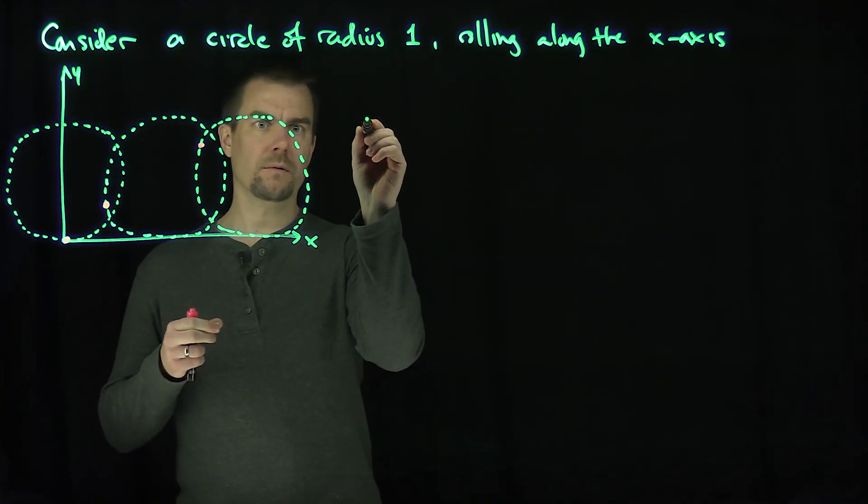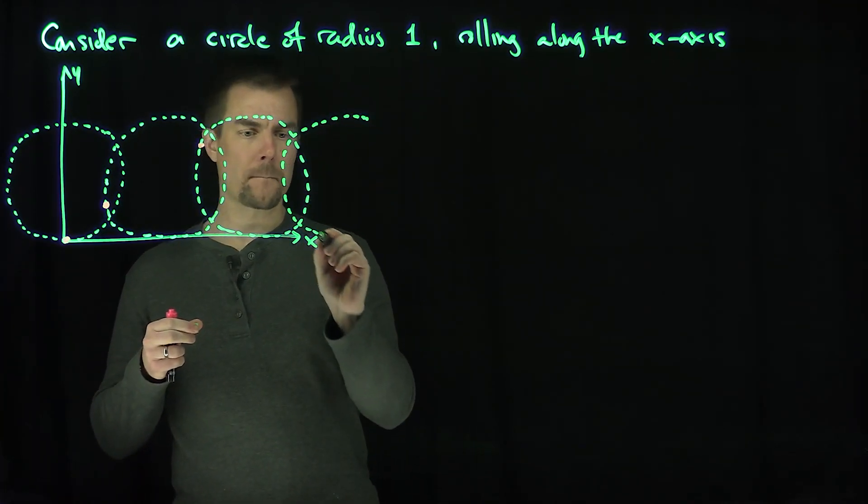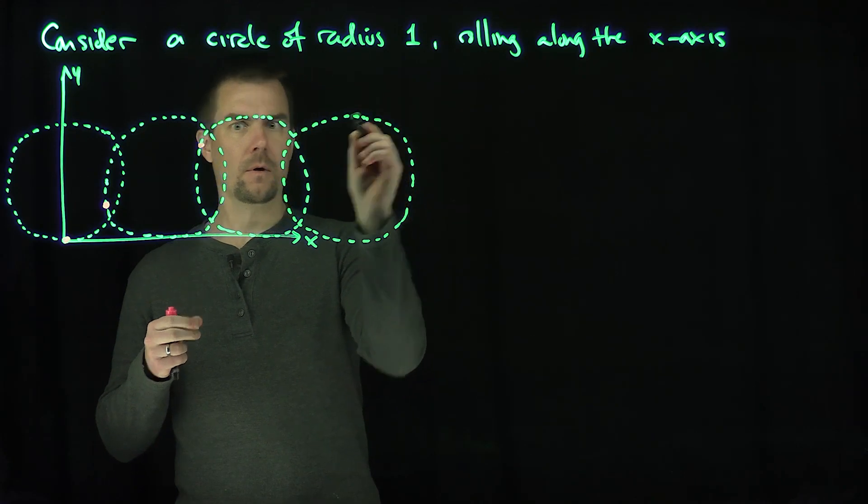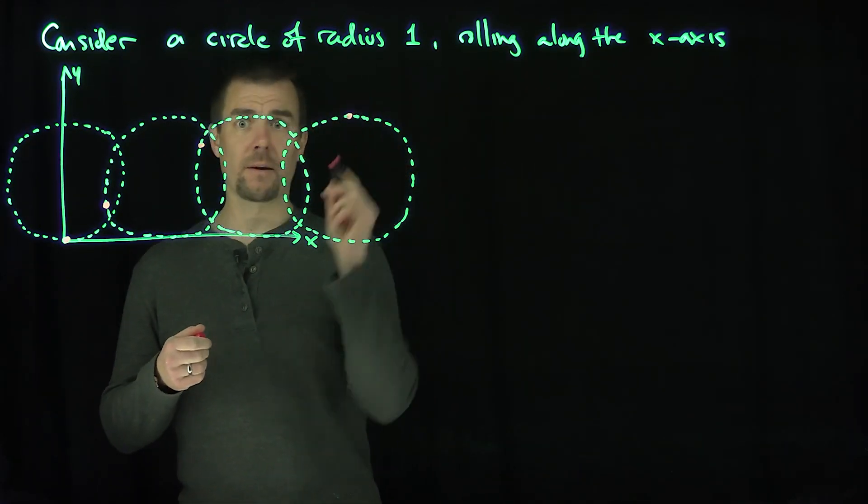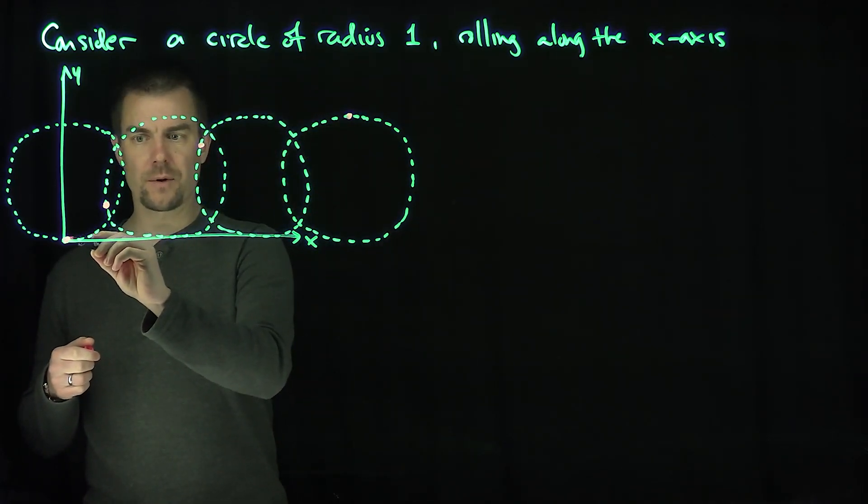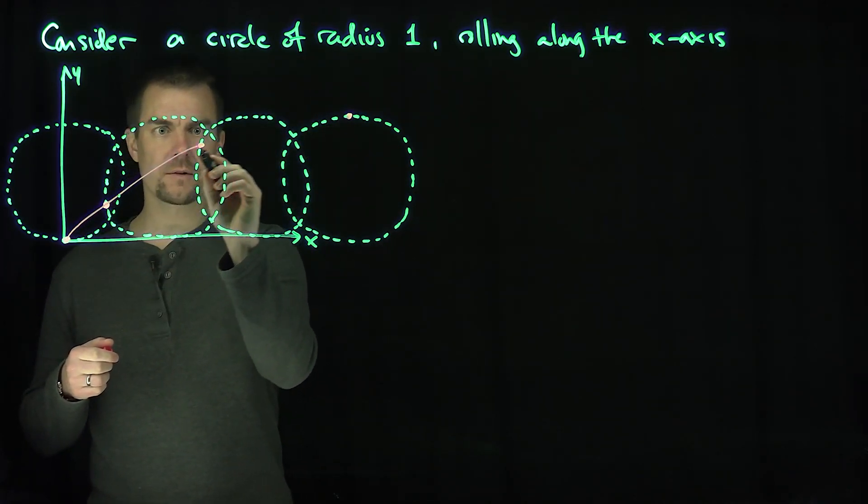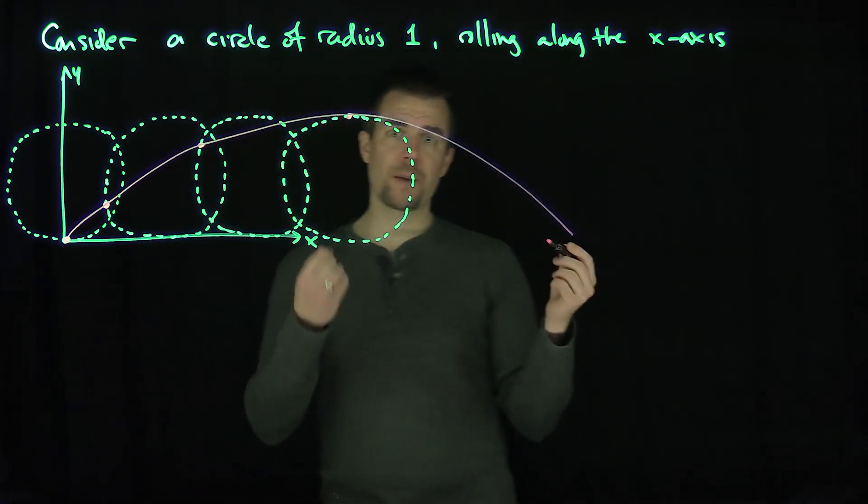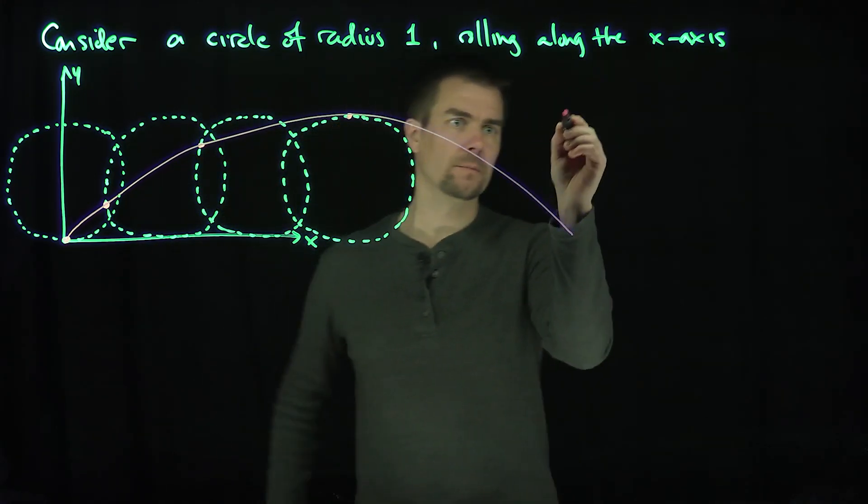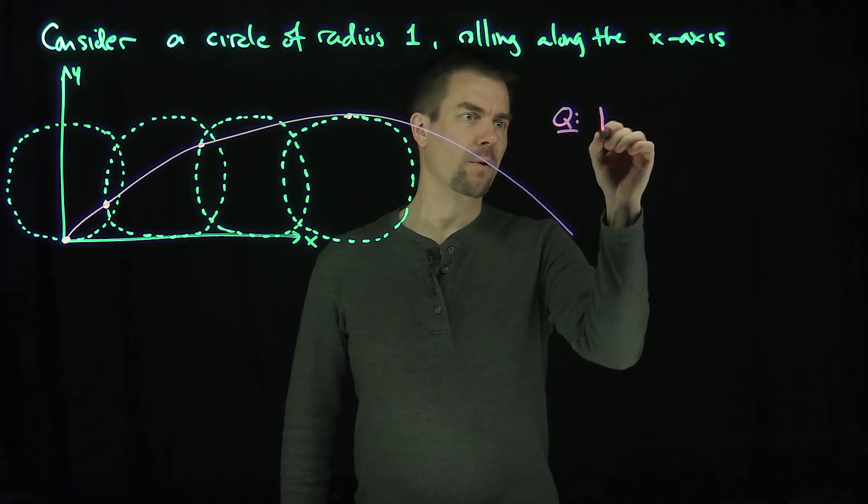And then it will start to come down again. So you're going to curve like this. And the question is, how can we parameterize this curve?